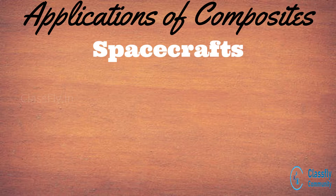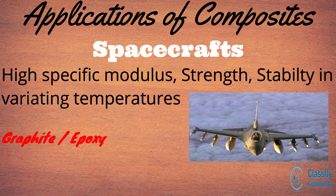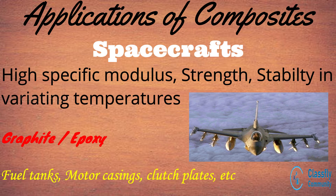Next, in spacecraft applications. The high specific modulus and strength, and also the dimensional stability during large variations in temperature, have to be withstood by the spacecraft. Some composite materials are the perfect choice for this work. Hence, these composite materials are used in the making of fuel tanks, motor casings, brake parts, clutch plates, etc. for spacecrafts.